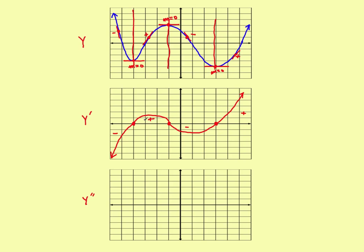First, identify where the red graph has a horizontal tangent. There's one right here, where the slope equals zero — go straight down and plot a point on the x-axis. There's another horizontal tangent about here — slope is zero, go straight down, and the second derivative graph goes through zero there.